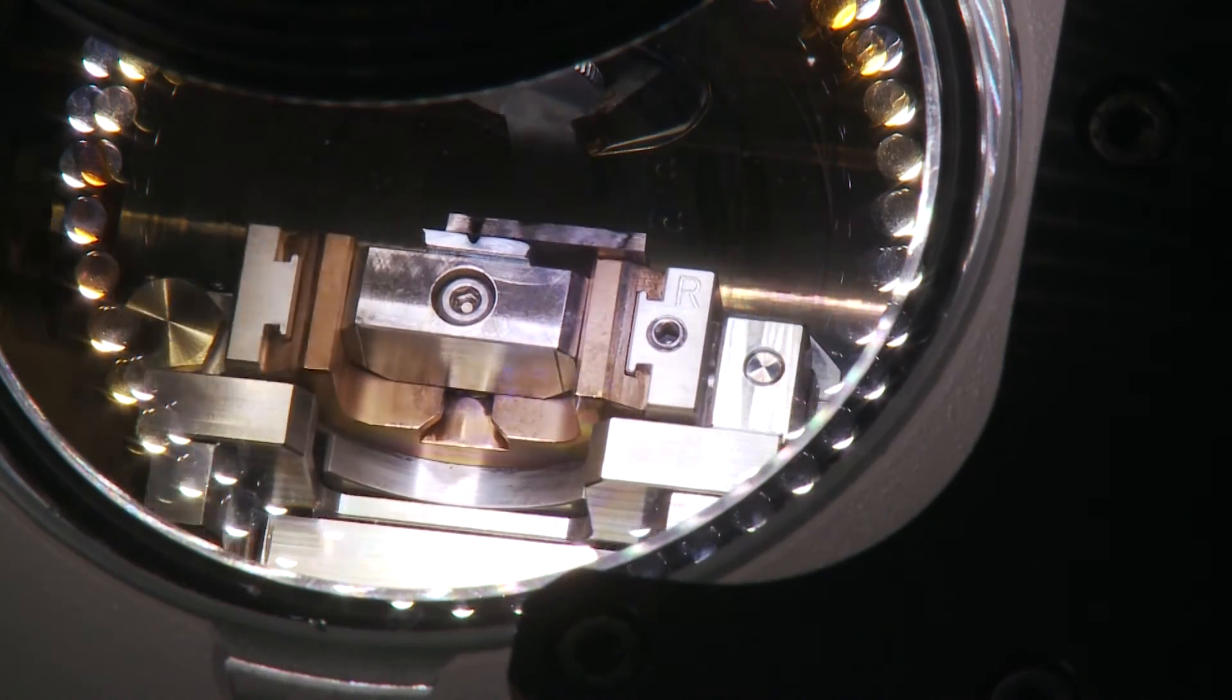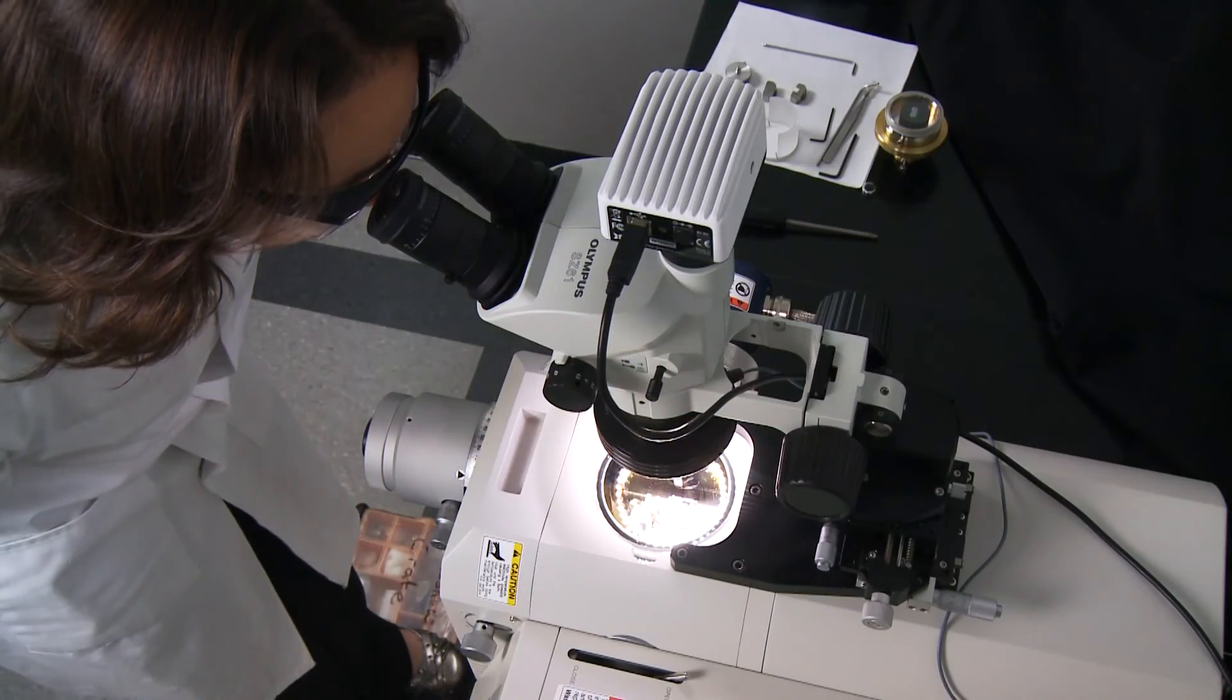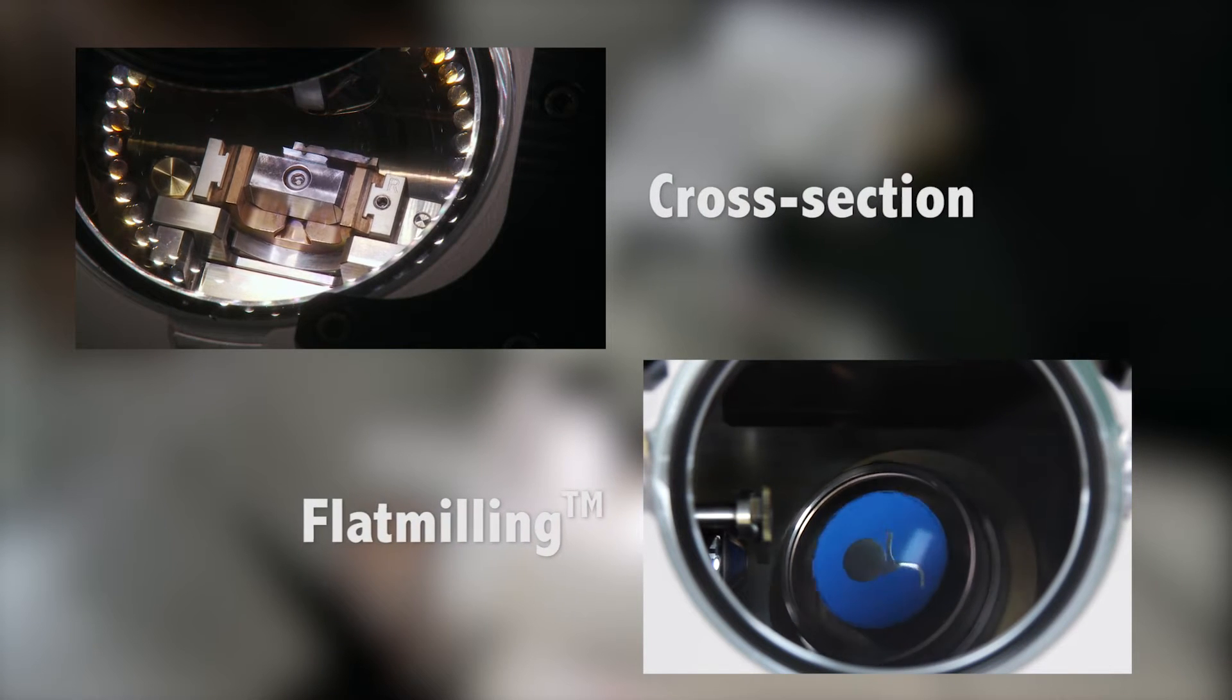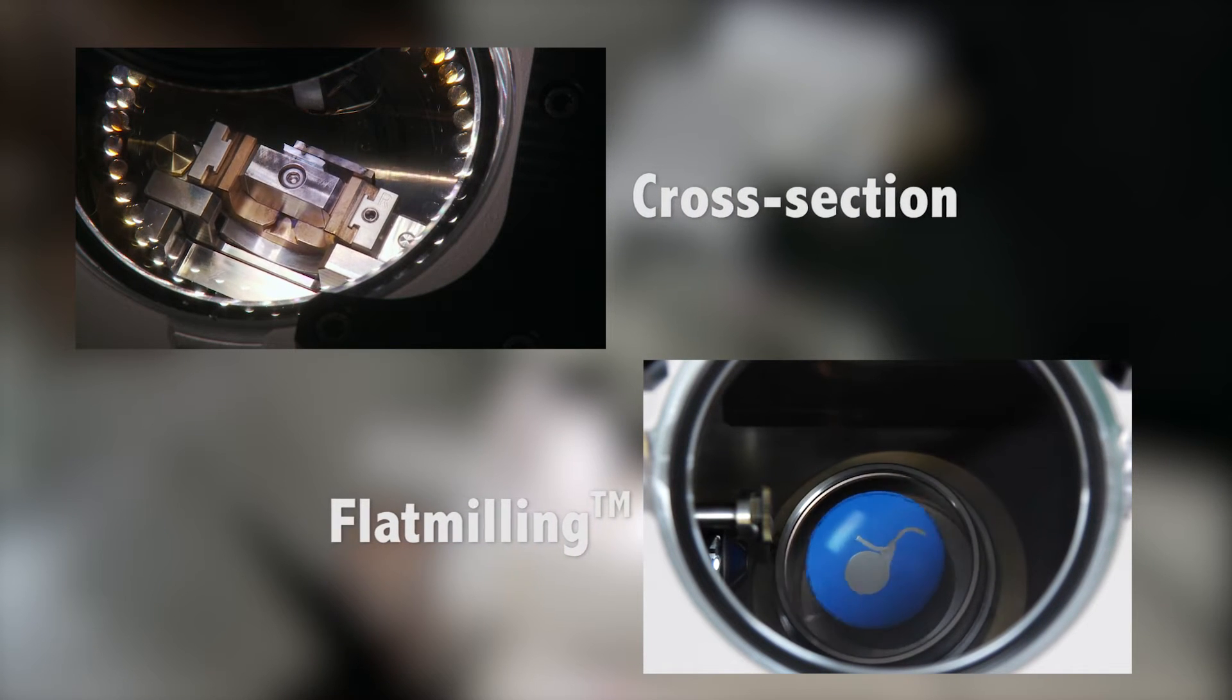The new Argon Ion Gun design of the Ion 4000 Plus allows it to reduce cross-section processing time by as much as 66% with an industry-leading guaranteed high milling rate on every system.